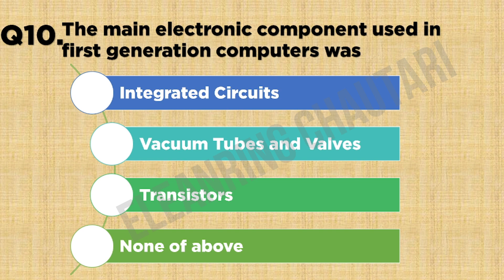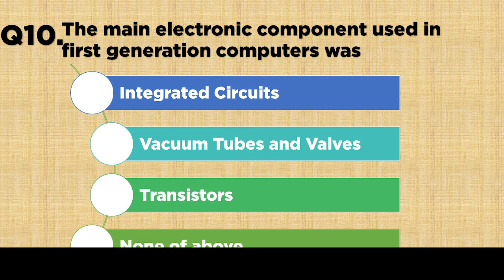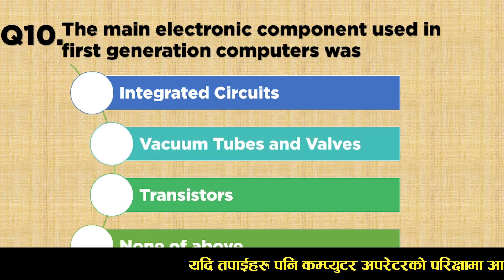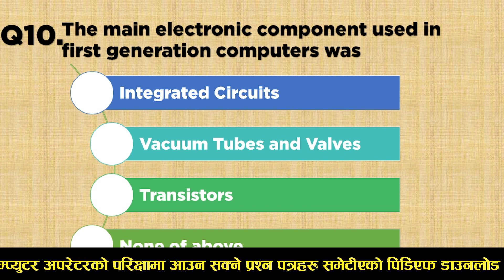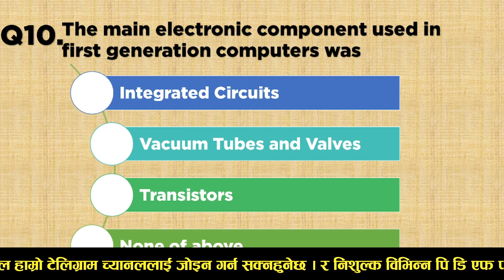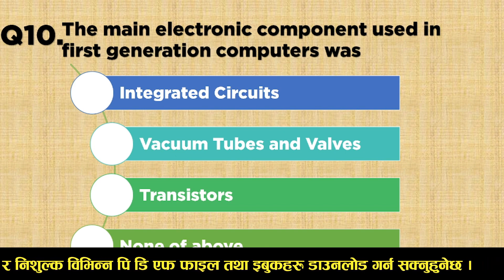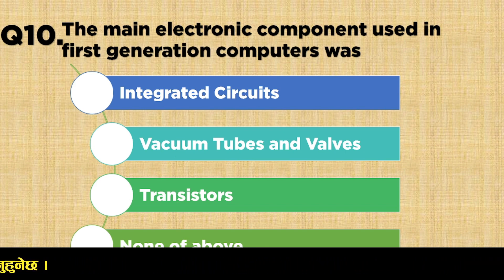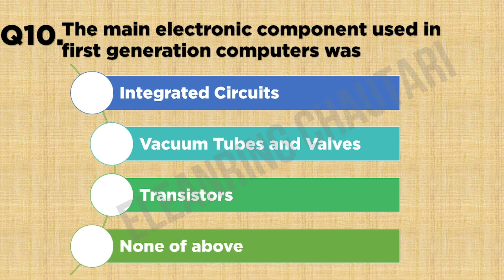The main electronic component used in first-generation computers: Option A: Integrated circuits. Option B: Back-end tubes and valves. Option C: Transistors. Option D: None of the above. The correct answer is Option B: Back-end tubes and valves.